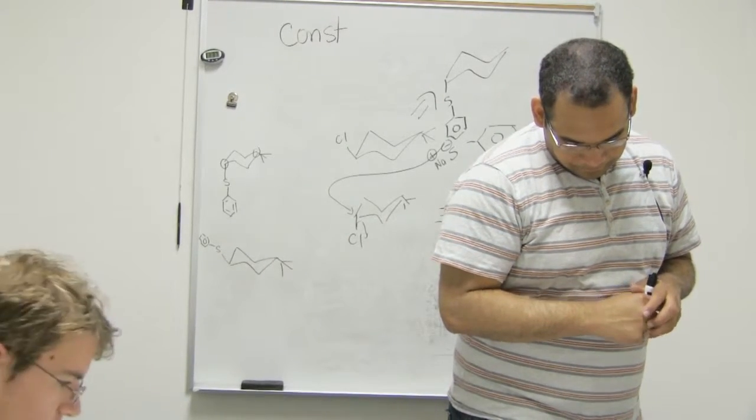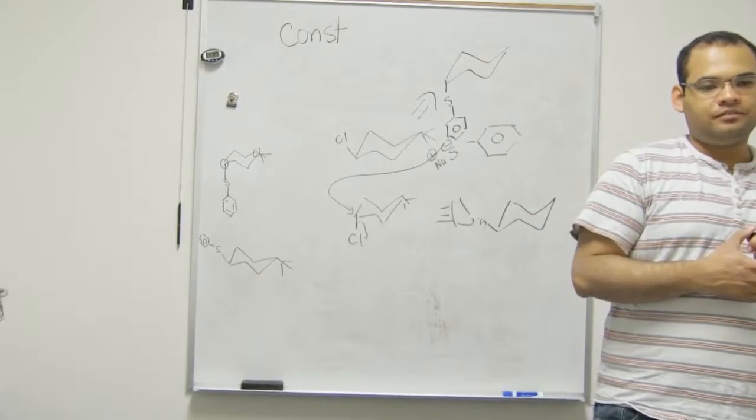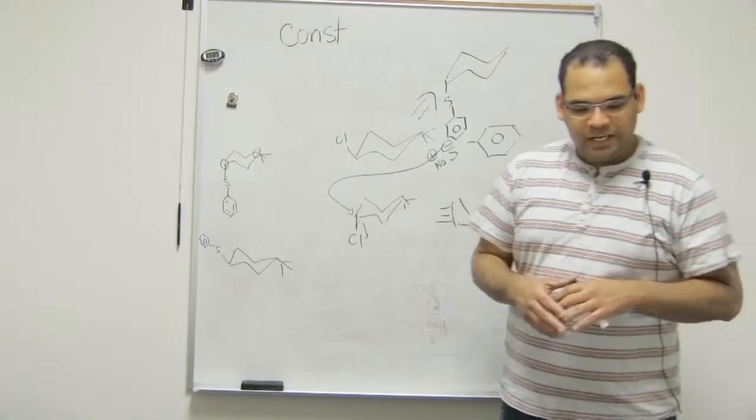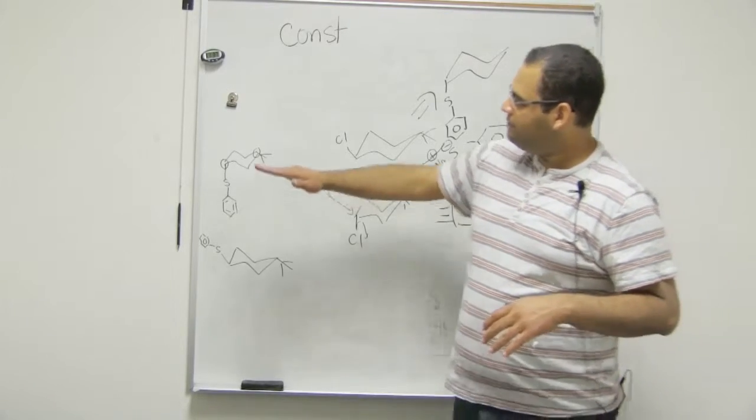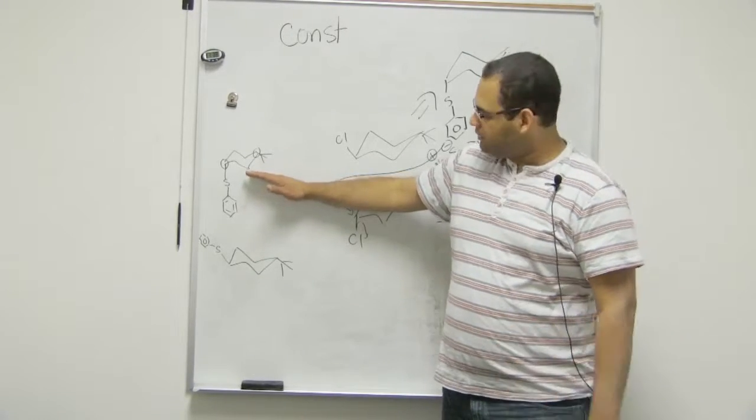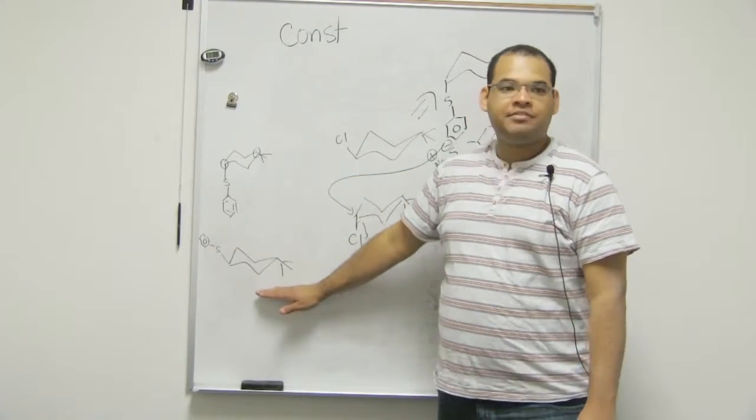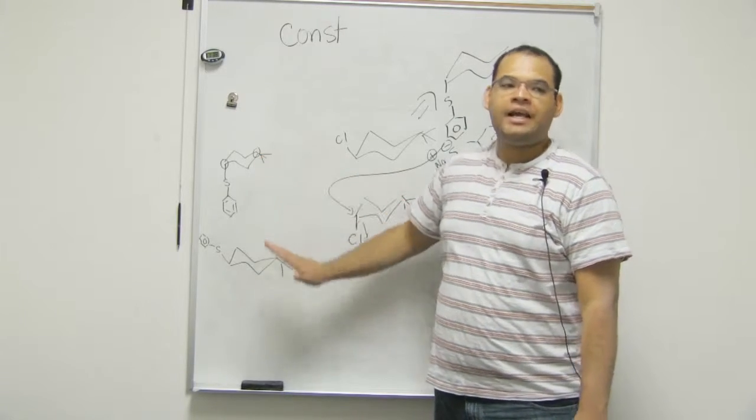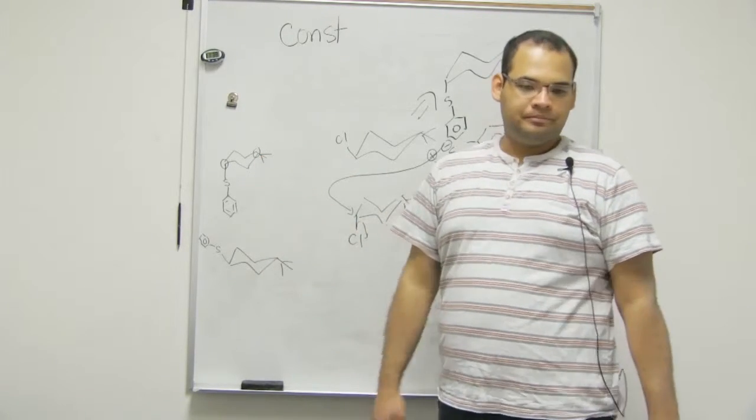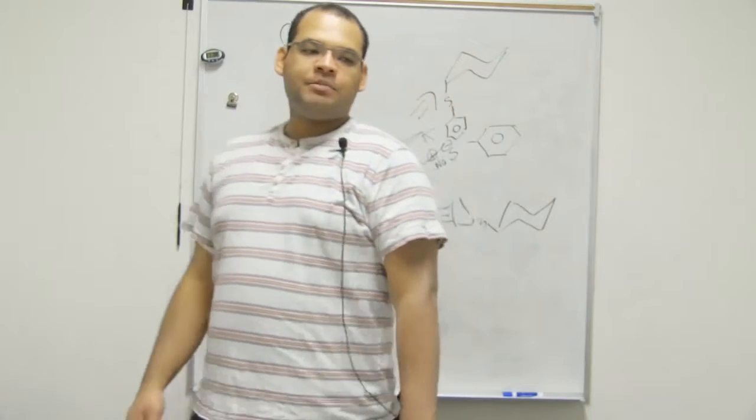Oh, okay. So they're both going to be diastereomers because they, just because. Yeah. They're just saying, what is the product of A? That. What is the product of B? That. Now what is the relationship between product A and product B? Diastereomers.